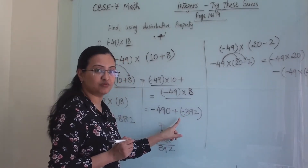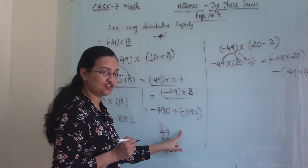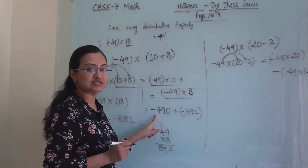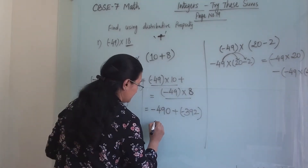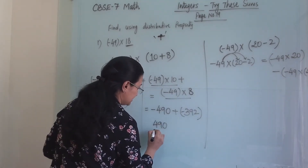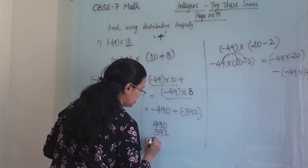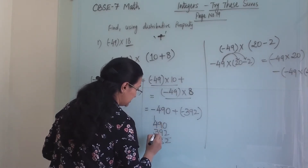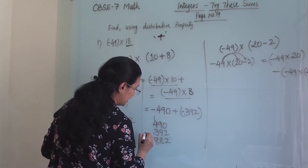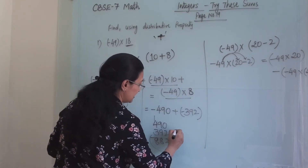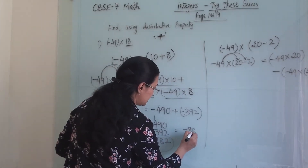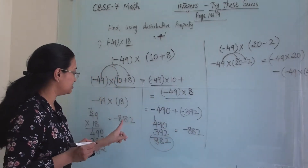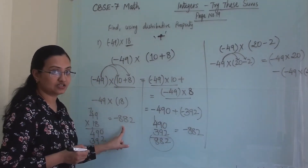Here we have to do addition — minus minus will become plus, and we do addition. The answer carries the bigger number's sign. 490 plus 392 gives 882, so our answer is minus 882. Here also minus 882.